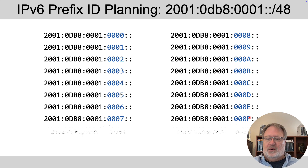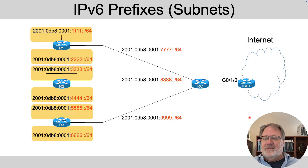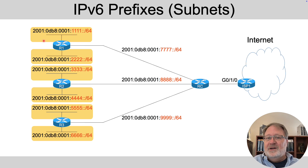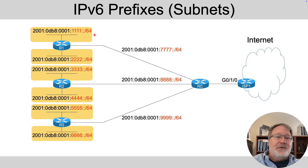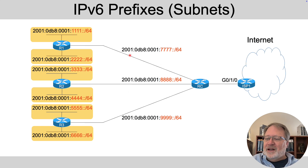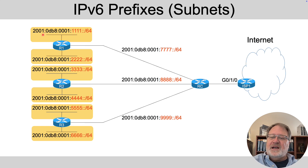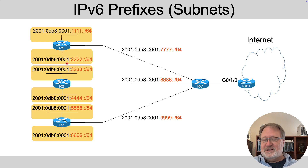Similar to IPv4, you look at your network topology and ask where you need subnets. The rules are the same: each LAN separated from others by a router needs a different subnet — a different prefix. So you might have six LAN subnets on the left and three in the middle, each with a unique value in the subnet ID portion, but all with the same first 12 hex digits because they all follow the GUA addressing rules.